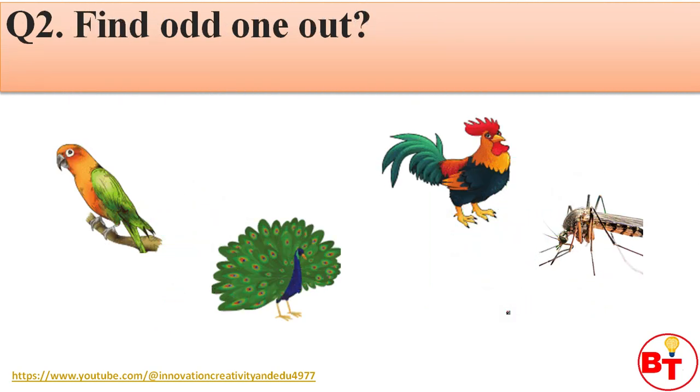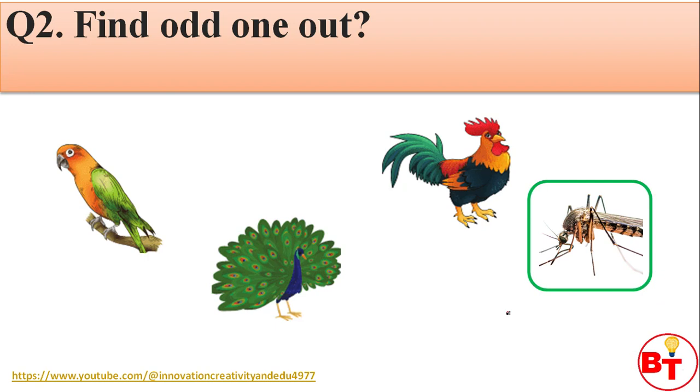Question number 2: Find the odd one out. Answer: Mosquito.